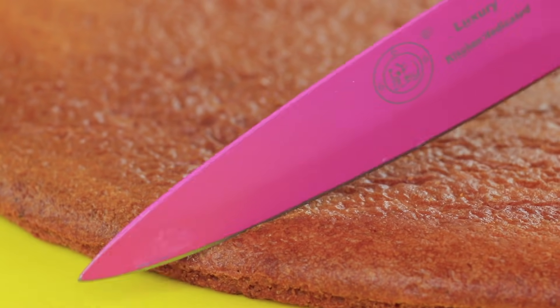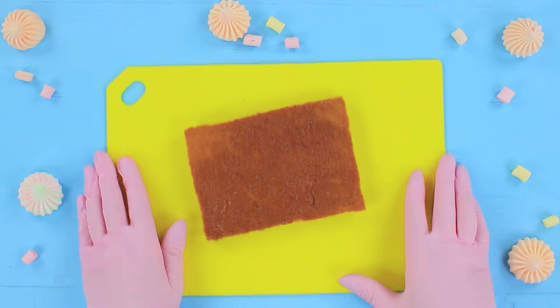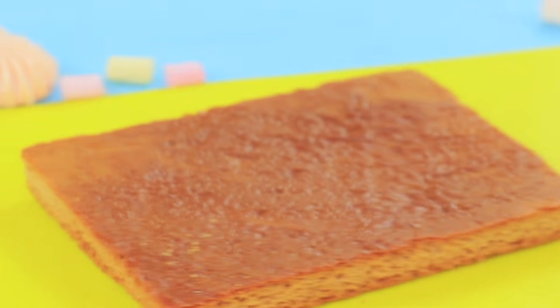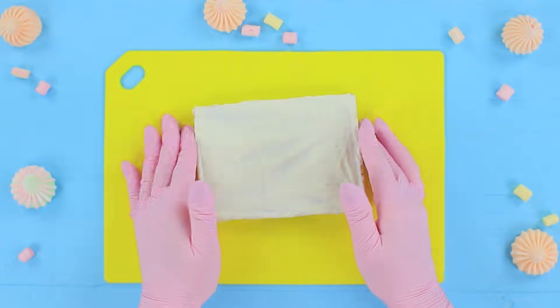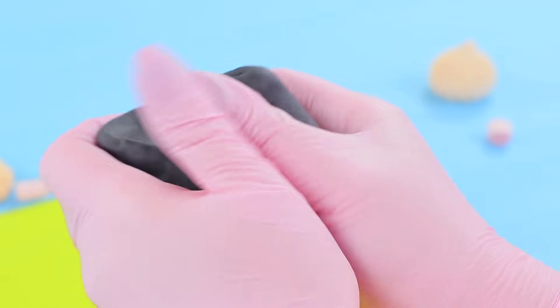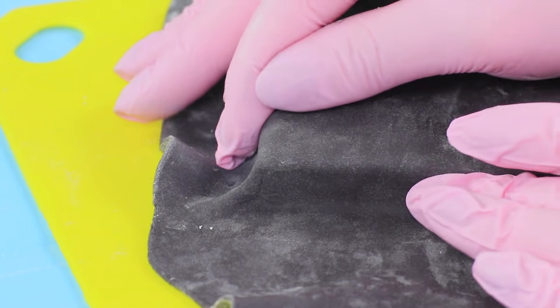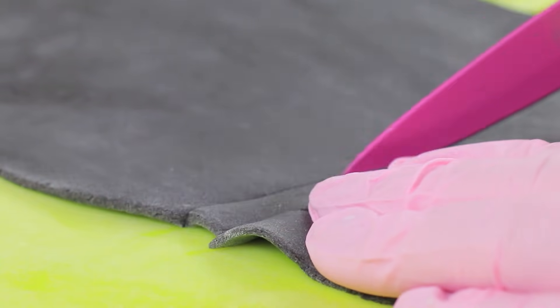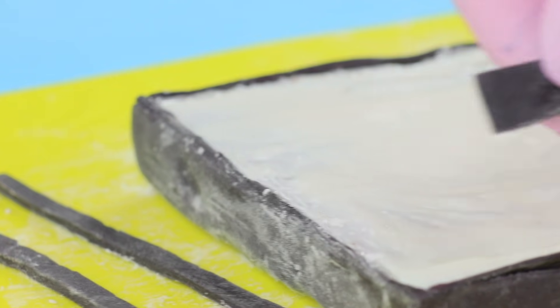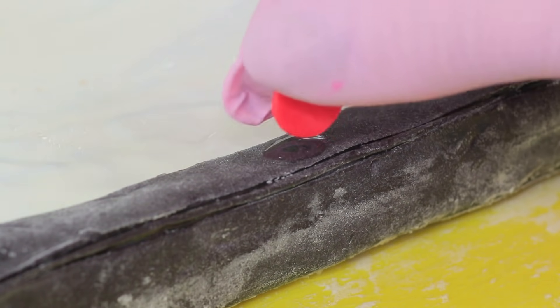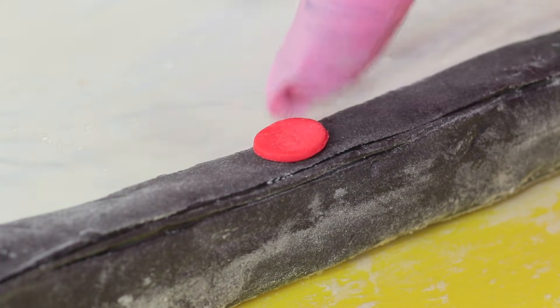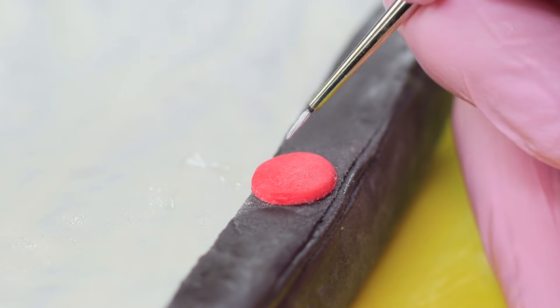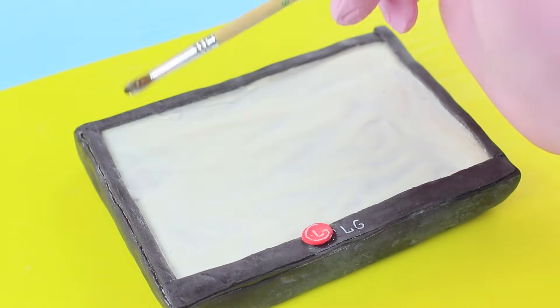Cut a rectangle out of a thin sponge cake. Cover all sides of it with melted white glaze. Roll out black fondant to make a thin layer and wrap it around the rectangle, leaving one side uncovered. Cut out thin fondant strips and attach them as the frame of the screen using edible glue. Make a button from red fondant and attach it to the center of the bottom side. Add a logo with food coloring. Add a sugar picture to the screen using edible glue.